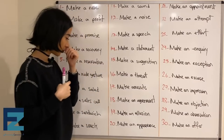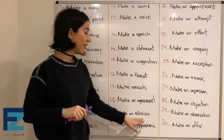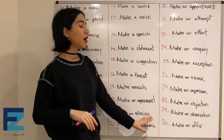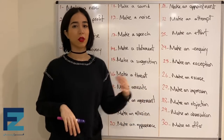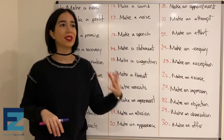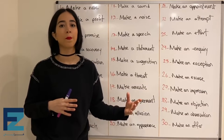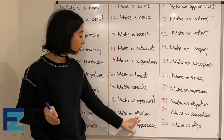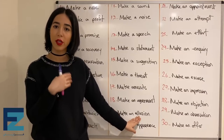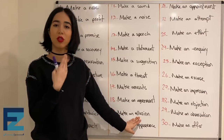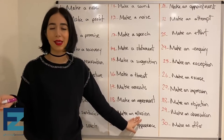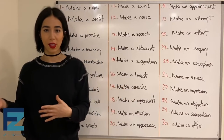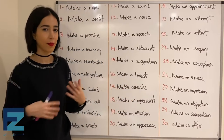Number nineteen: make an allusion. Make an allusion means to refer something to somebody — یه جمله یا یه حرفی رو به یک کسی نسبت دادن یا برگرداندن.